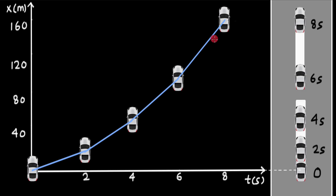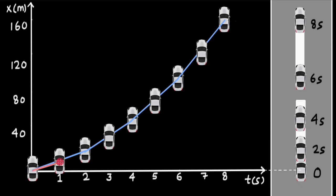Now let's take snapshots after every one second instead of every two seconds. With this smaller time interval, these are where the car will be at the different time instants. If we join all of these positions, we again get straight lines with increasing slopes, but the line has gotten slightly smoother. If we kept reducing the time interval using a super powerful camera capturing positions after extremely small intervals — say 0.0002 seconds — then joining all those points gives us a smooth curve.